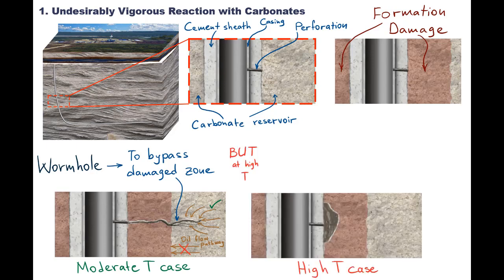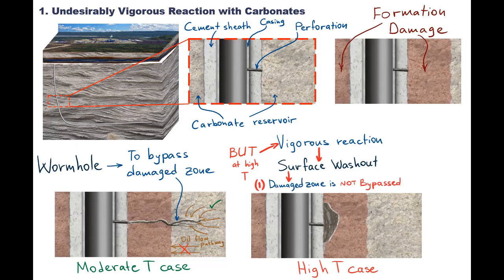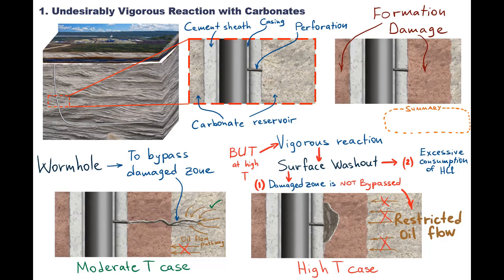However, at high temperatures, HCl reaction with calcite is especially vigorous. As a result, HCl injected into a high-temperature carbonate reservoir would cause surface dissolution instead of wormhole creation. In this case, the stimulated zone doesn't go beyond the damaged zone, and oil flow is still restricted by this low permeability zone. In summary, it is very challenging to design acidizing jobs using HCl for high-temperature carbonate reservoirs.